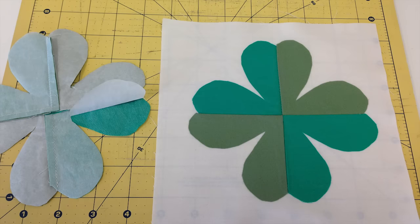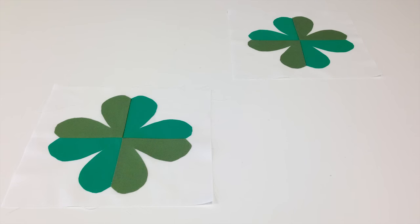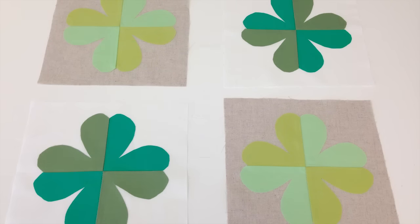Peel the backing paper of your steam-a-seam off carefully and center it in the middle of an 8-inch square from fabric E and iron into place. Repeat this same process for the 8-inch squares from fabric C and D, but place them in the center of an 8-inch square from fabric F.